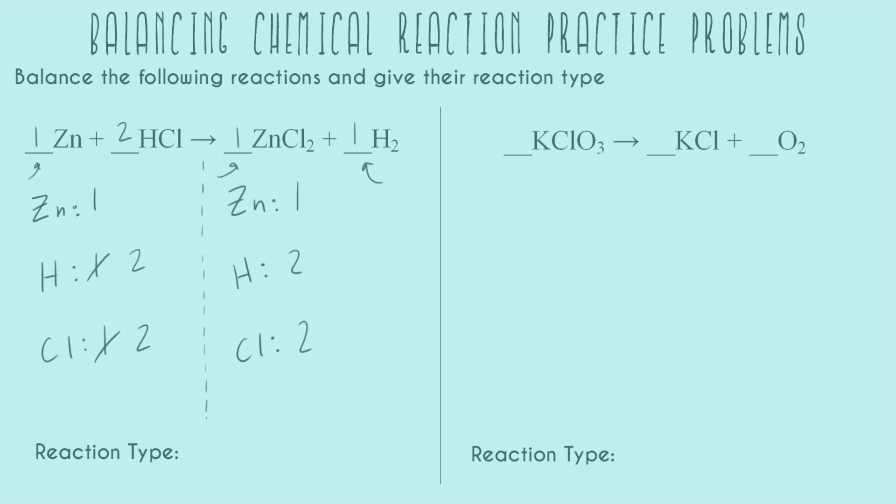We can see all of our coefficients and this reaction type is single replacement and we can tell that because over here on the left-hand side we have zinc completely by itself. It's not bonded to any other element and then over here we have hydrogen completely by itself. It's not bonded to any other element even though it's bonded to another hydrogen. It's still by itself as an element and then we can see this swap occurred. So hydrogen and chlorine used to be together and now chlorine is with zinc instead of hydrogen.